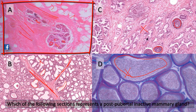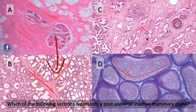In the active breast, the ducts will bud into alveoli and start secreting, while in the inactive breast there are no secretory alveoli — only ducts surrounded by connective tissue septa and embedded in adipose tissue. So section A represents a post-pubertal inactive mammary gland.